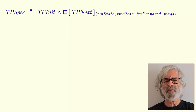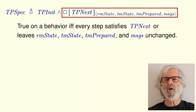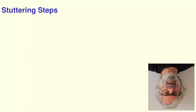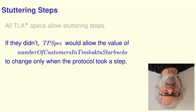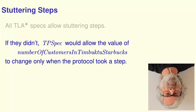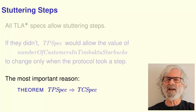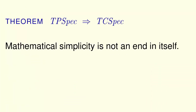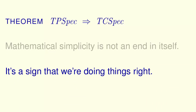Similarly for the two-phase commit spec. This always formula is true on a behavior if and only if every step of the behavior satisfies the next state formula TPNext, or else leaves all the specification variables unchanged. Steps that leave all the spec's variables unchanged are called stuttering steps. Most people find stuttering steps weird — every TLA Plus spec allows them. If they didn't, the two-phase commit spec would allow the value of every variable in the universe to change only when the two-phase commit protocol took a step, and that would be really weird. But the most important reason to allow stuttering steps is embodied in this theorem: implementation becomes simple logical implication. Mathematical simplicity is not an end in itself, but it is a sign that we are doing things right.